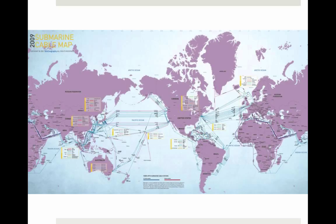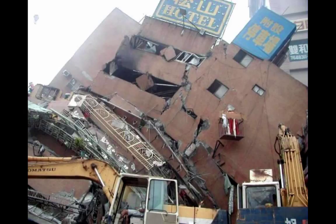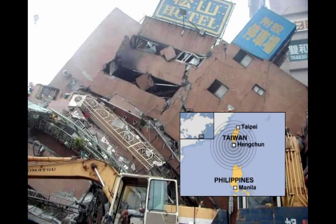What you're looking at here is an open-source map of fiber optic cables that lay on the ocean floor connecting one continent to another. In 2006, there was an earthquake near Taiwan that resulted in a submarine landslide that broke cables as it flowed down the seabed. Commerce, travel, and communications to Southeast Asia were significantly impacted, taking eleven ships forty-nine days to repair the damaged cables. Despite most traffic being rerouted immediately, internet delays were apparent for two months after the earthquake.